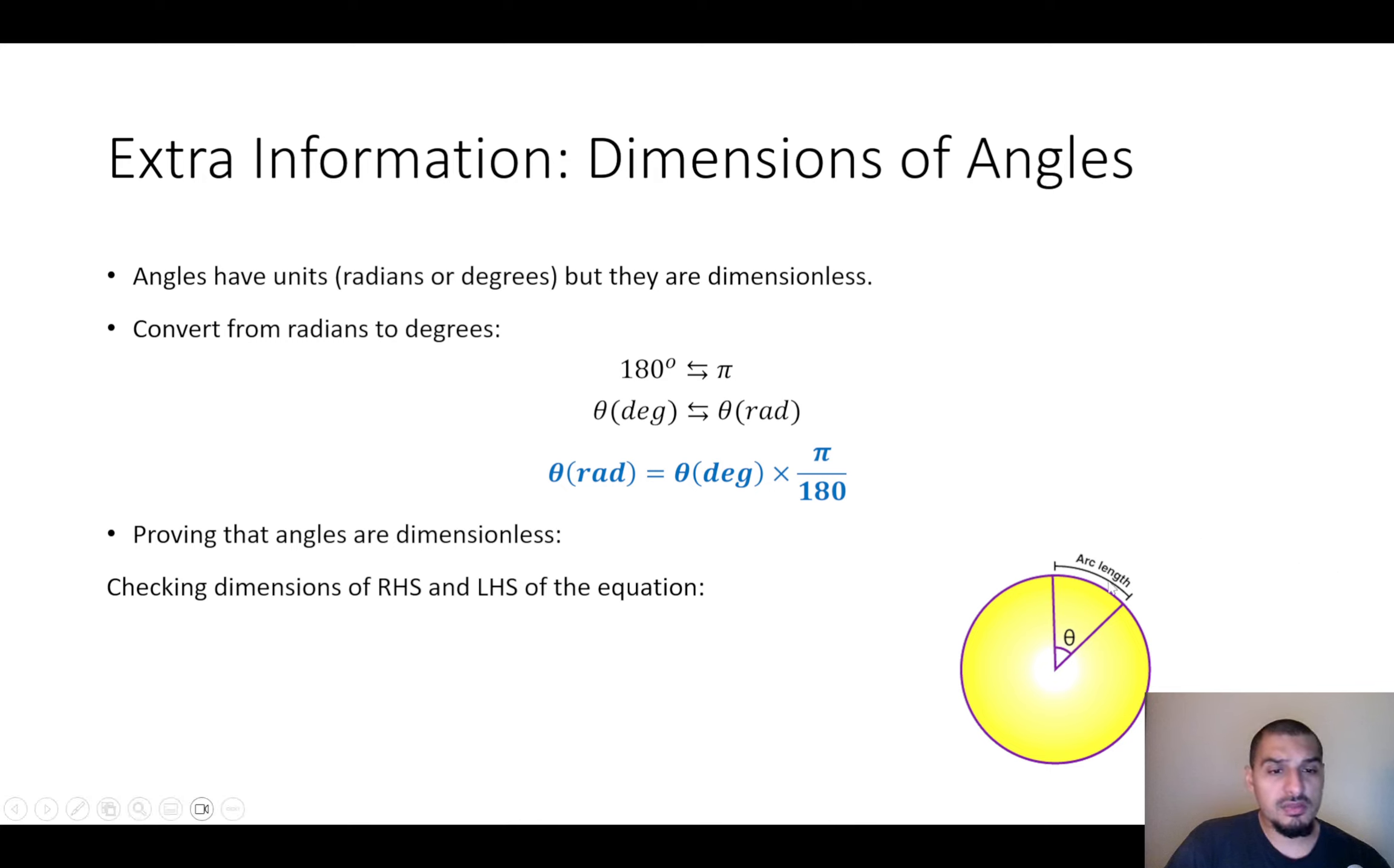We know that the length of an arc is r multiplied by theta. So the equation is length equals the radius multiplied by theta. If you check the dimensions of both sides, you'll have the arc length has the dimensions of length. The radius has a dimension of length. And this is the angle that we don't know if it has dimensions or not.